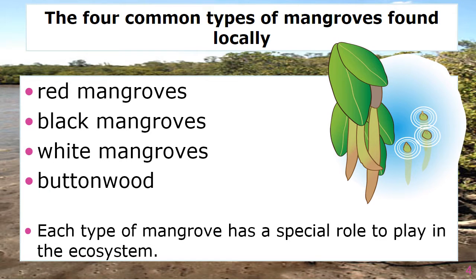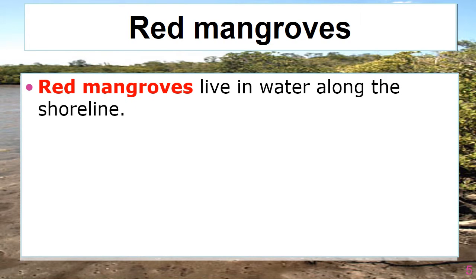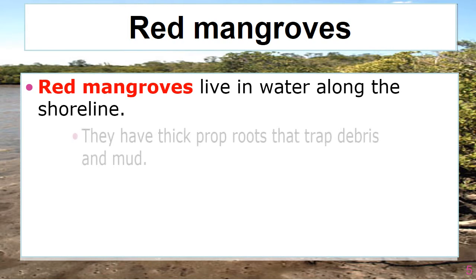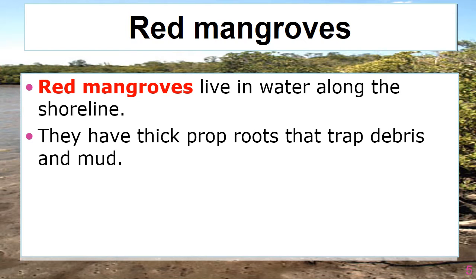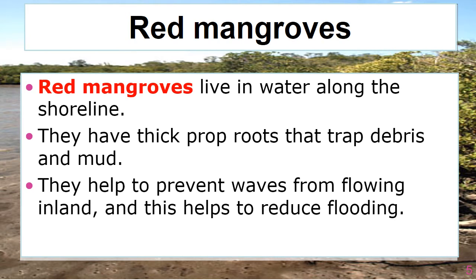Each type of mangrove has a special role to play in the ecosystem. Red mangroves live in water along the shoreline. They have thick, propped roots that trap debris and mud. They help to prevent waves from flowing inland and this helps to reduce flooding.